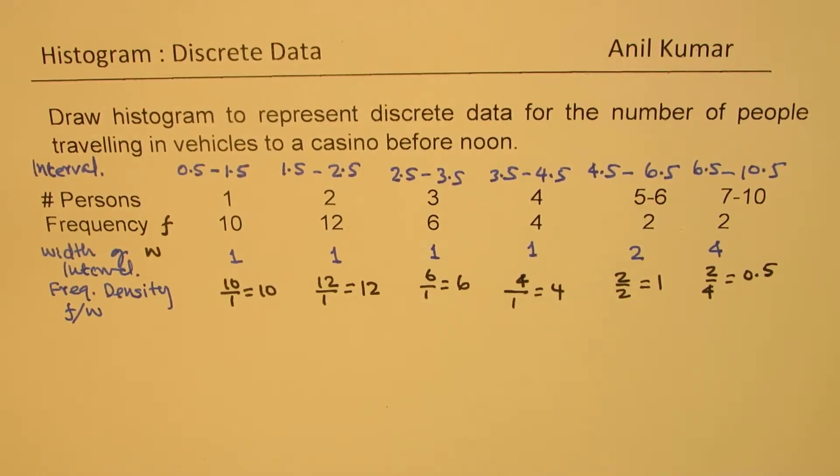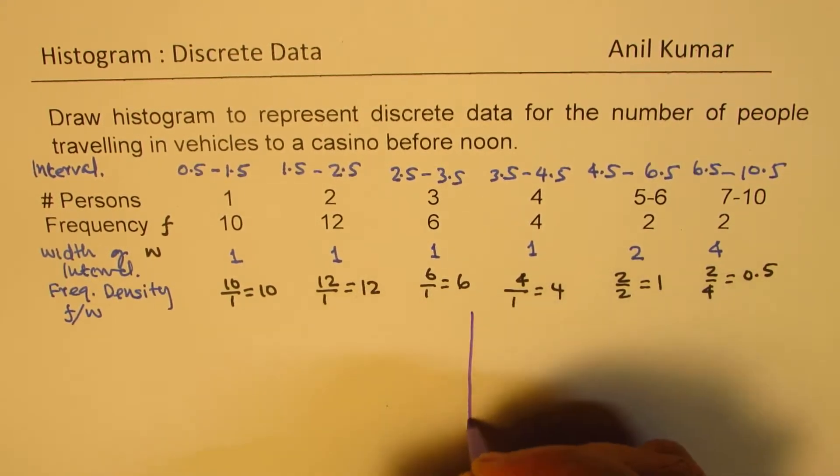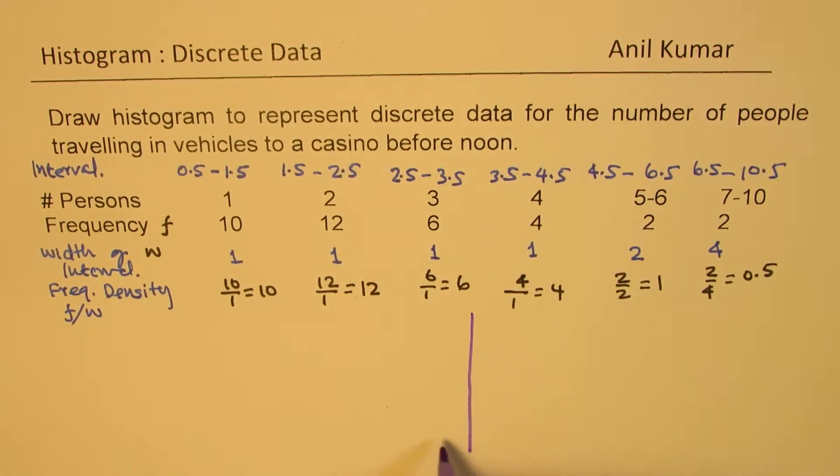And now we can actually sketch the plot. Perfect. So I hope that is clear. You can actually pause the video now, and then plot the histogram. So what we have here is, we have these numbers up to 10. So let's say, this is 2 for us.